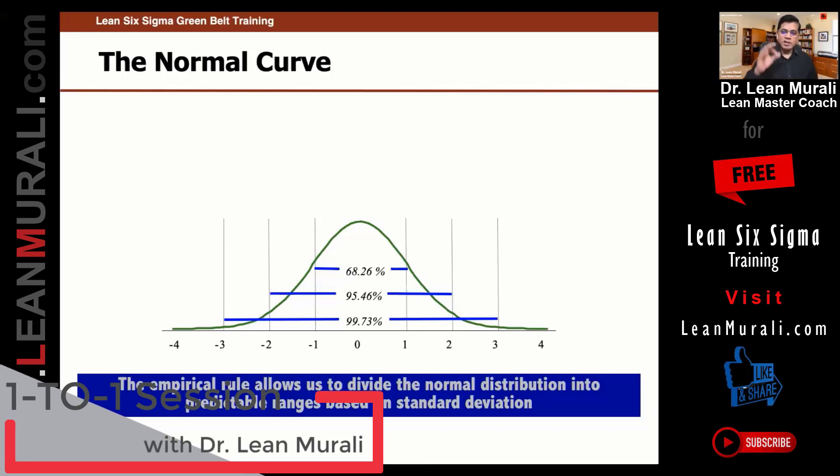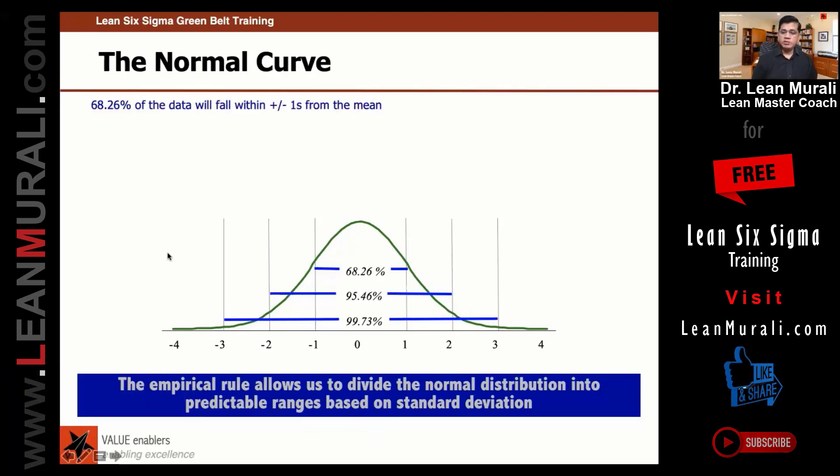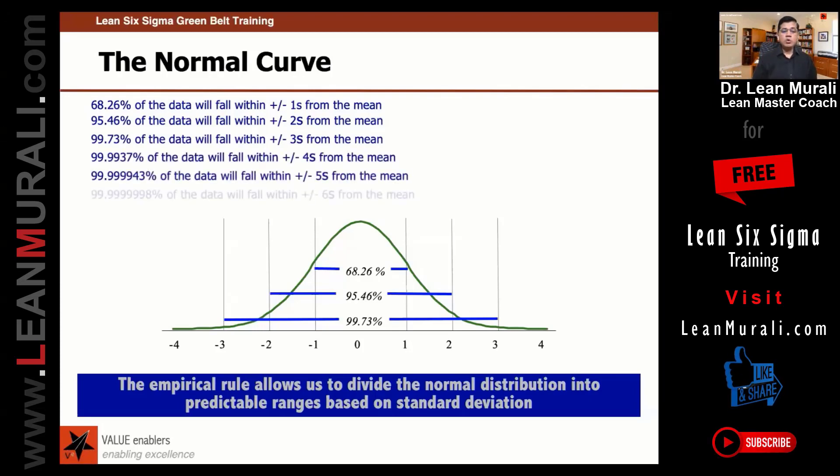This is the fundamental to understanding of the normal distribution curve. So 68.26% of the data will fall in plus or minus one standard deviation. 95.46% will fall. This is the rule of normal distribution that statisticians have established. Once you have calculated standard deviation, you can close your eyes and say that so many pieces will lie between plus or minus 3 standard deviations. That is 99.73% will lie between and so on and so forth.